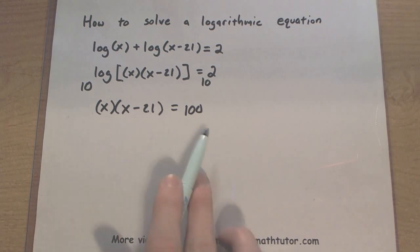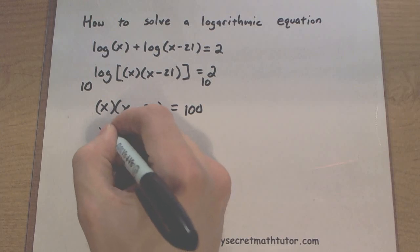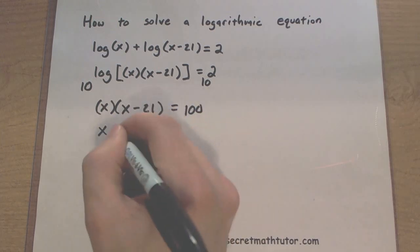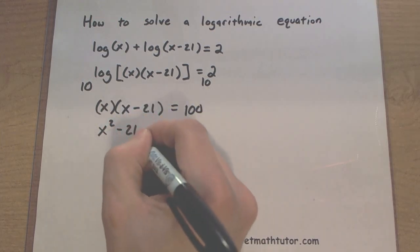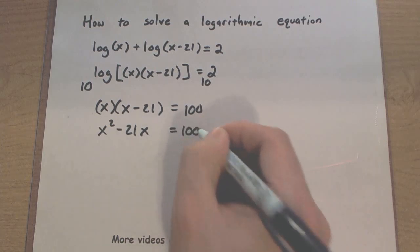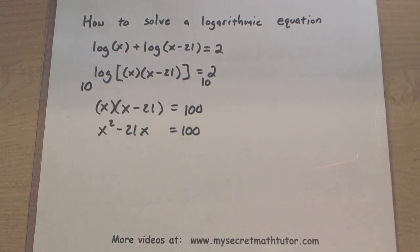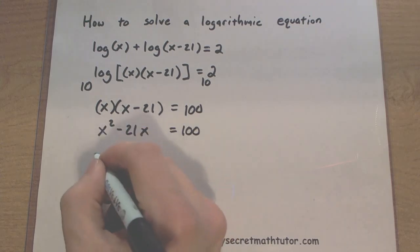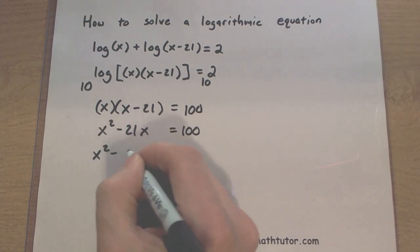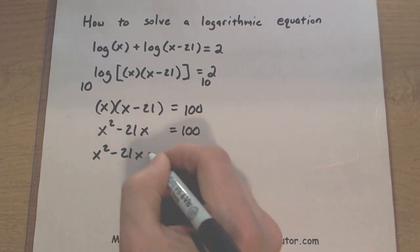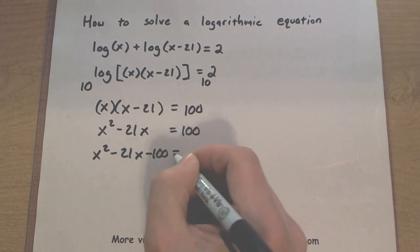Alright, looking pretty good. Now I have an equation that is not logarithmic. In fact, if I distribute my x here, I get an x squared minus 21x. It looks more quadratic now because of the x squared. Okay, so let's get that 100 over here by subtracting 100 from both sides.